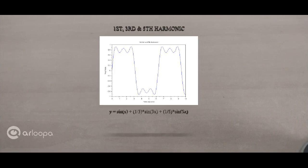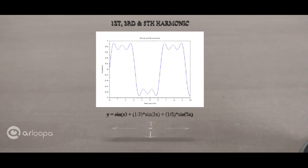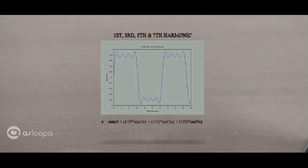So in this graph, in addition to the first and third harmonic, we also have the fifth harmonic. In this graph, we have the first, third, fifth and the seventh harmonic. So the graph is gradually picking up a square wave shape.